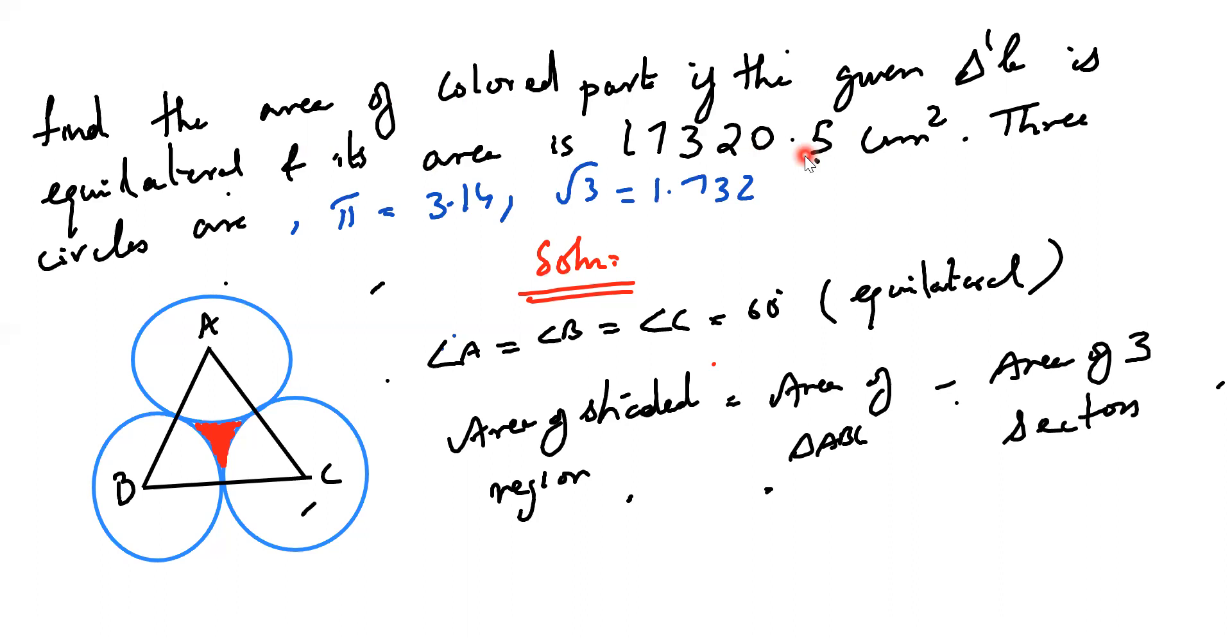So how do I get this? The formula, area of triangle ABC is equal to 17320.5. So I know the formula, root 3 by 4 into side square is equal to 17320.5. Root 3 they are given, what is the value? 1.732 they are given.